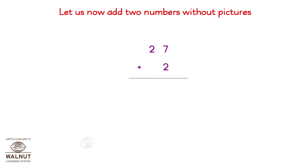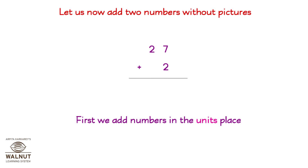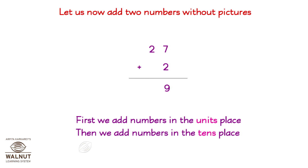Let us now add two numbers with our pictures. 27 plus two. First, we add numbers in the units place: seven plus two is nine. Then, we add numbers in the tens place: two plus nothing is two. So, the answer is 29.